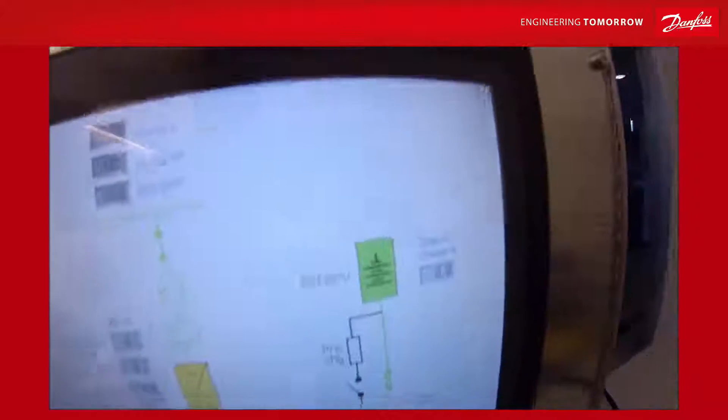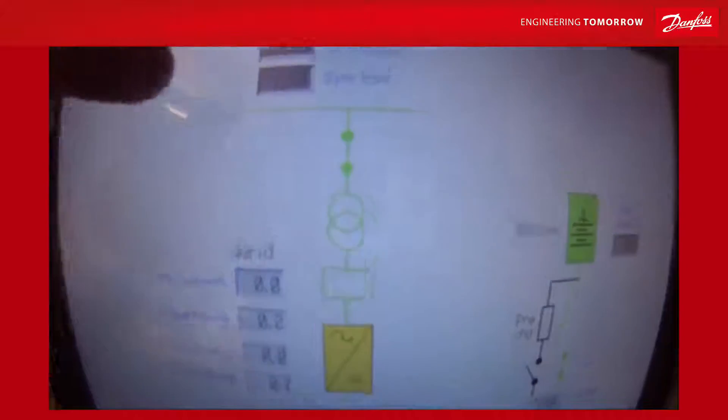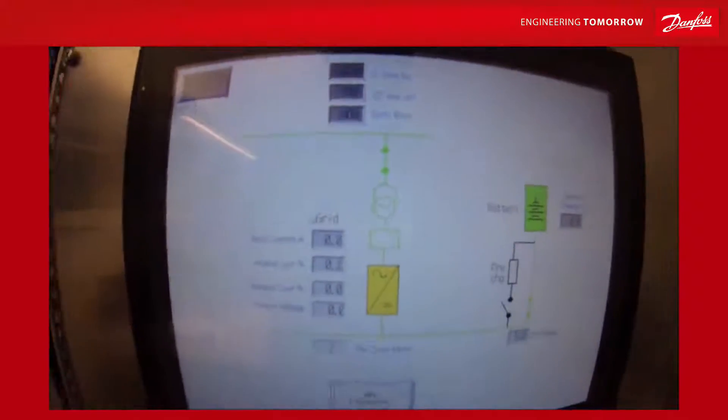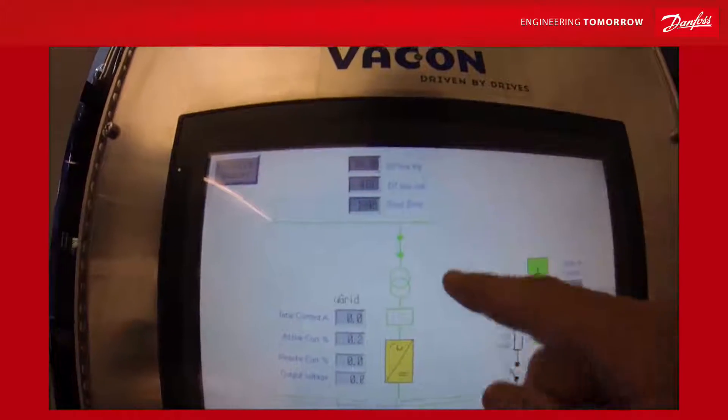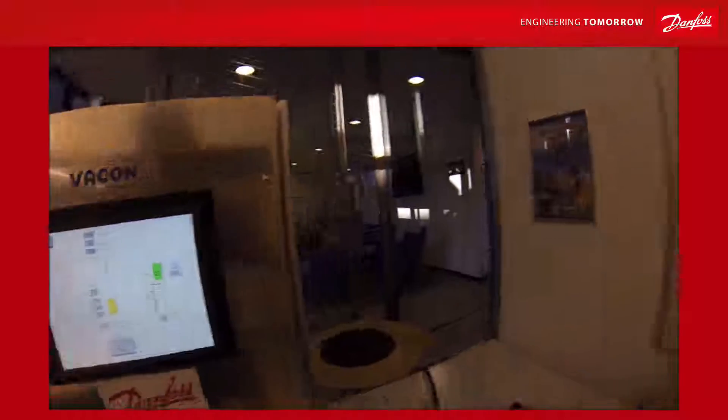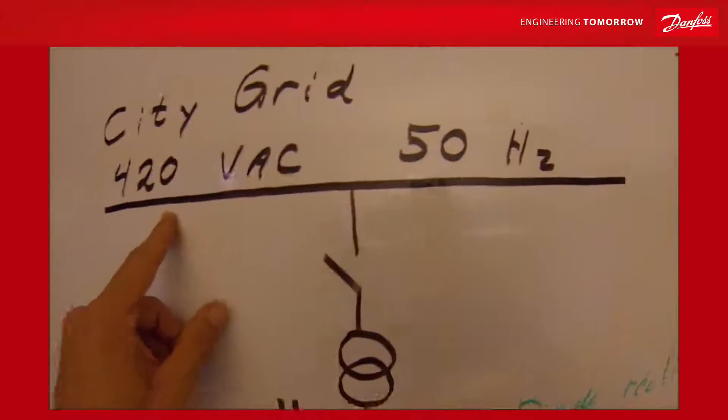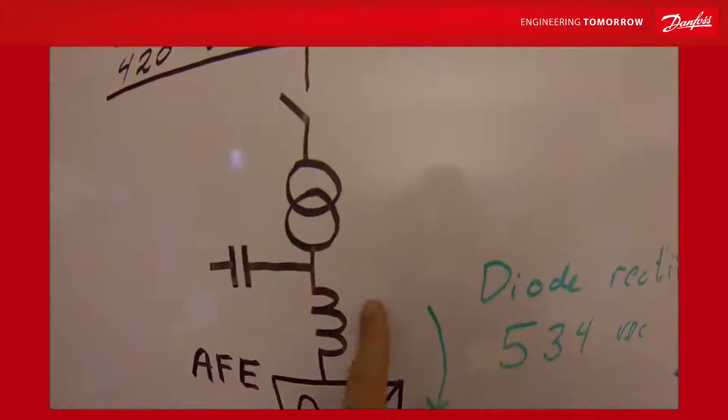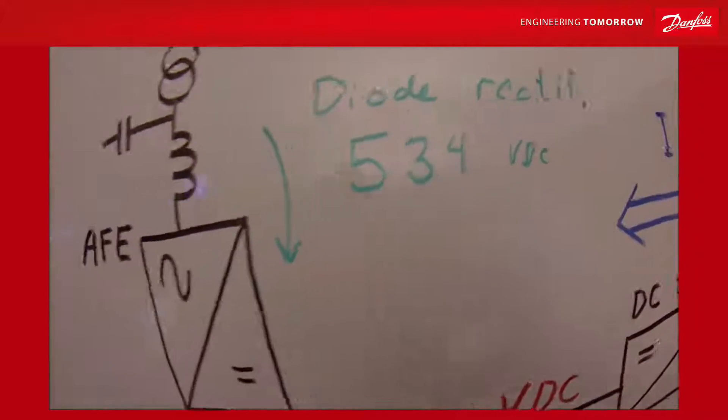The active front end have been pre-charged and is connected to the city. So it means that the diode rectifier mode now will produce 534 volts. So this is the 420 volt AC diode rectified to 534.